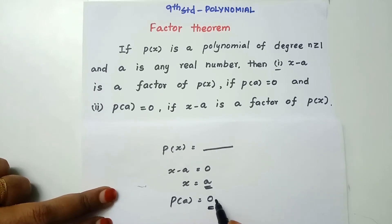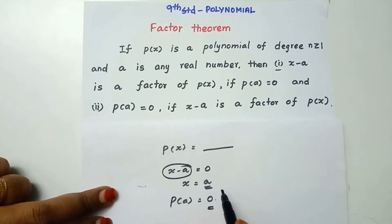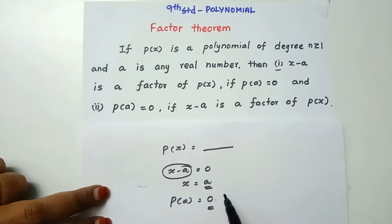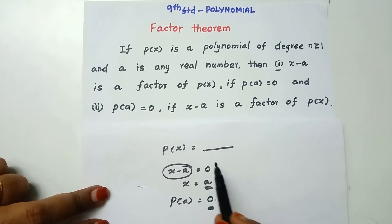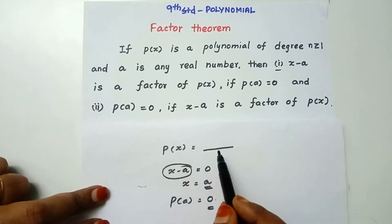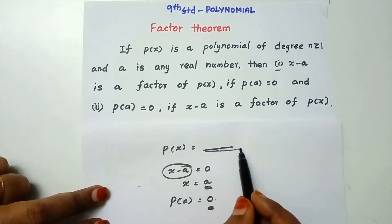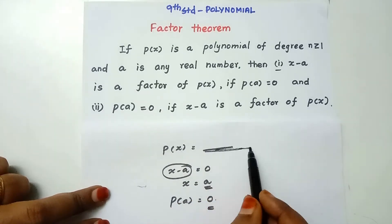If x minus a is a factor, then we have a factor of P(x). P(x) is a polynomial, and x minus a is a factor.